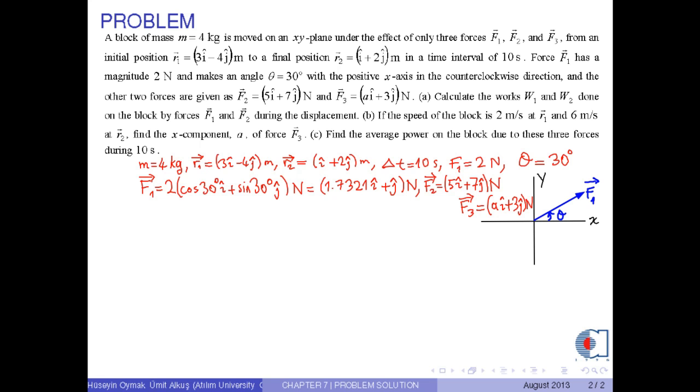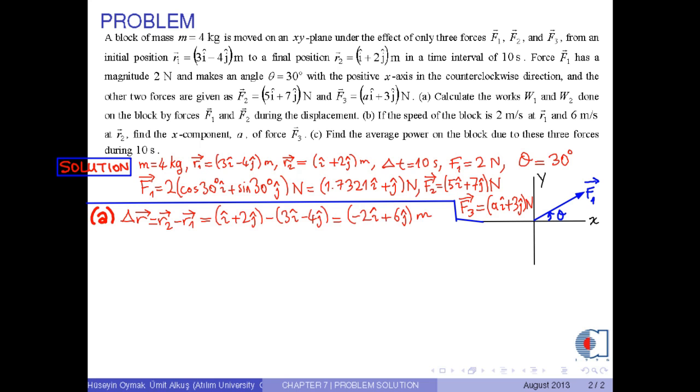Part A: Calculate the works W1 and W2 done on the block by the forces F1 and F2 during the displacement. First, we find the displacement which is defined to be delta R equals R2 minus R1. With the corresponding values, we obtain negative 2i hat plus 6j hat meters.